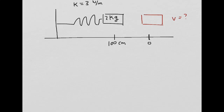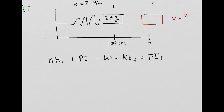A couple of videos ago, we learned that initial kinetic energy plus initial potential energy plus work equals final kinetic energy plus final potential energy. Let's consider the initial and final positions. We know that kinetic energy is one half mv squared, and the potential energy for springs is one half kx squared.